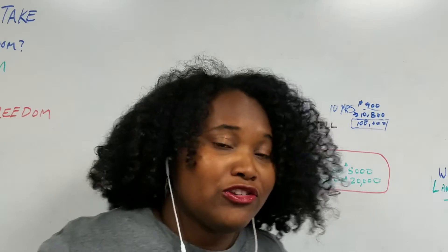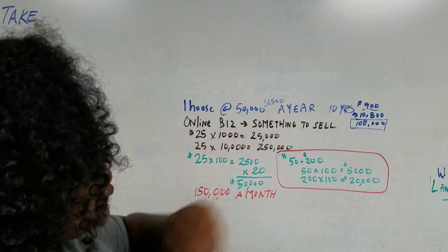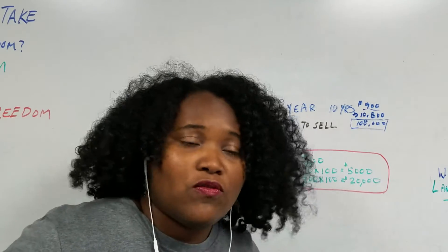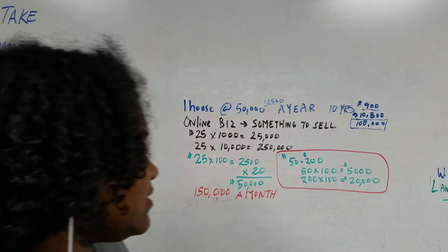Have something $25 to sell. Now, I already told you 25 times a thousand buys, $25,000. And these can be also affiliate fees, referral fees, all that good stuff. 25 times 10,000 people is $250,000.